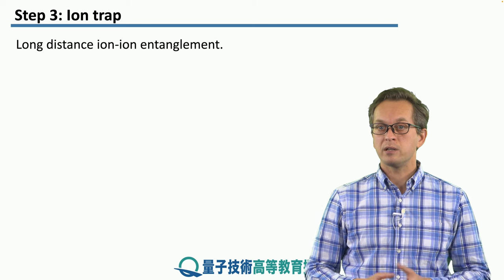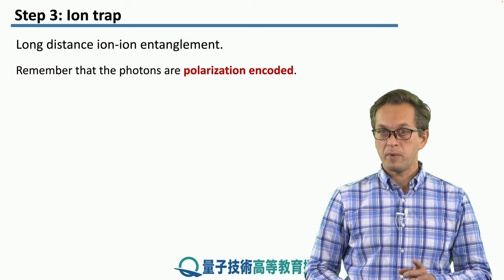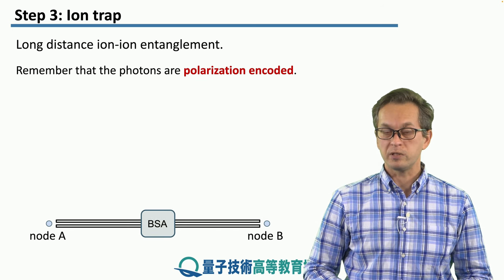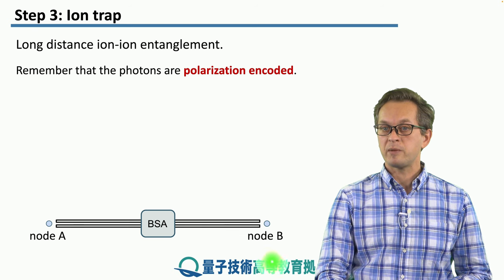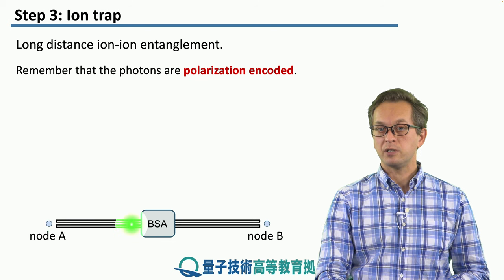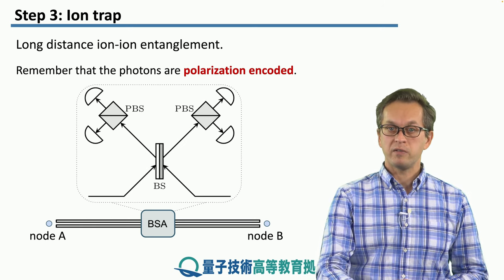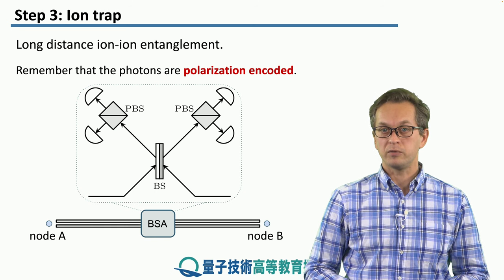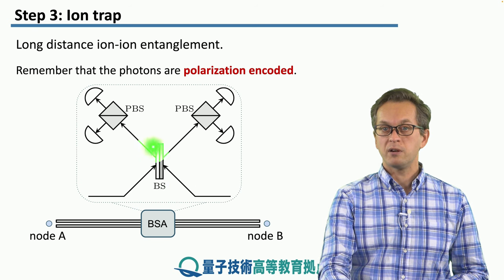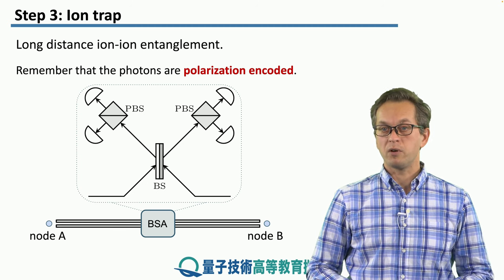Once the photon is in the fiber, we can start talking about ion-ion entanglement over long distances. The idea is very similar to before, but now we're using polarization-encoded flying qubits. We have node A with one ion in one ion trap, and node B with another ion. They emit photons which are captured into fiber, and then we perform a Bell state measurement. This measurement setup uses the more complicated Bell state measurement setup discussed in the first step, because we are using polarized photons. The photon from node A and the photon from node B arrive, and depending on the pattern of clicks observed, our Bell state measurement either succeeds or fails, because we can only distinguish two of the four Bell states. These are the basic ideas behind ion traps.